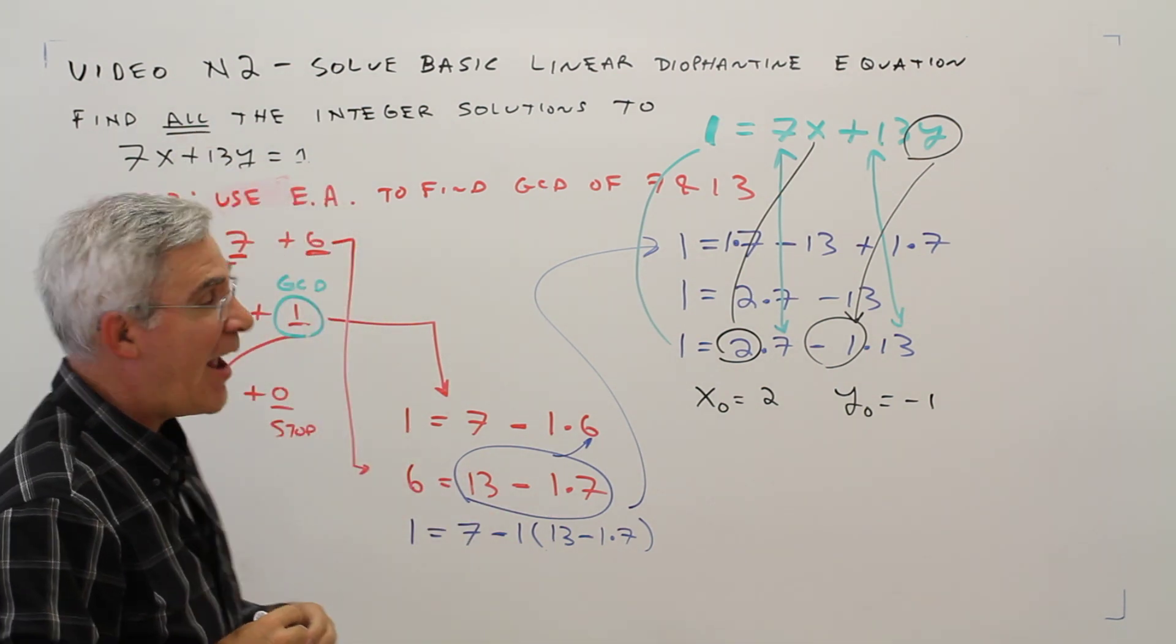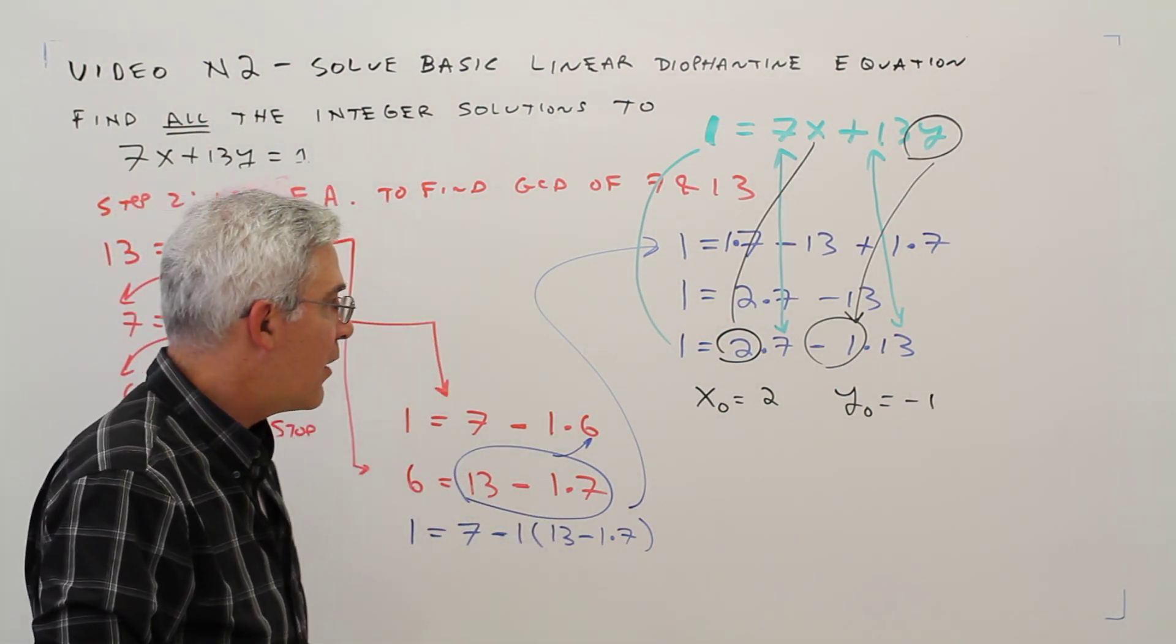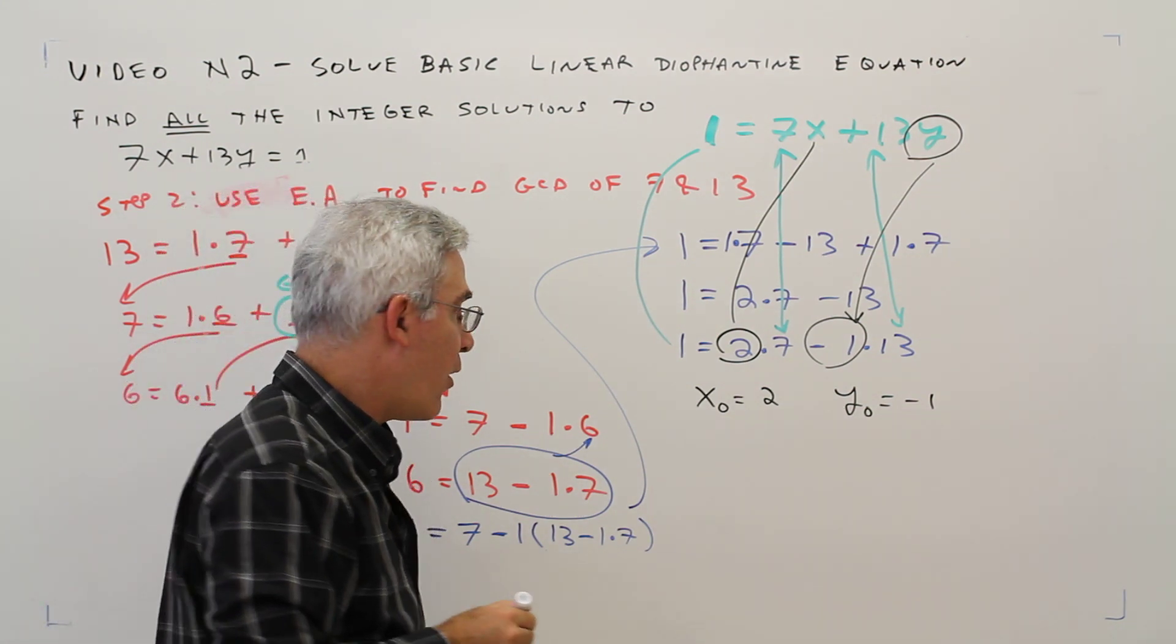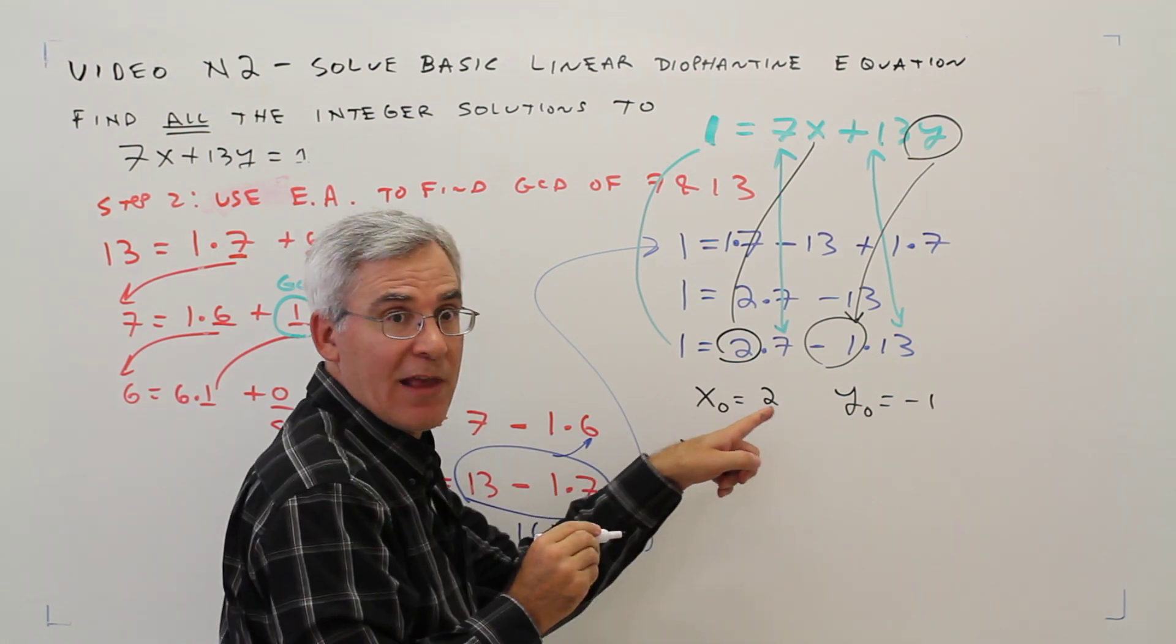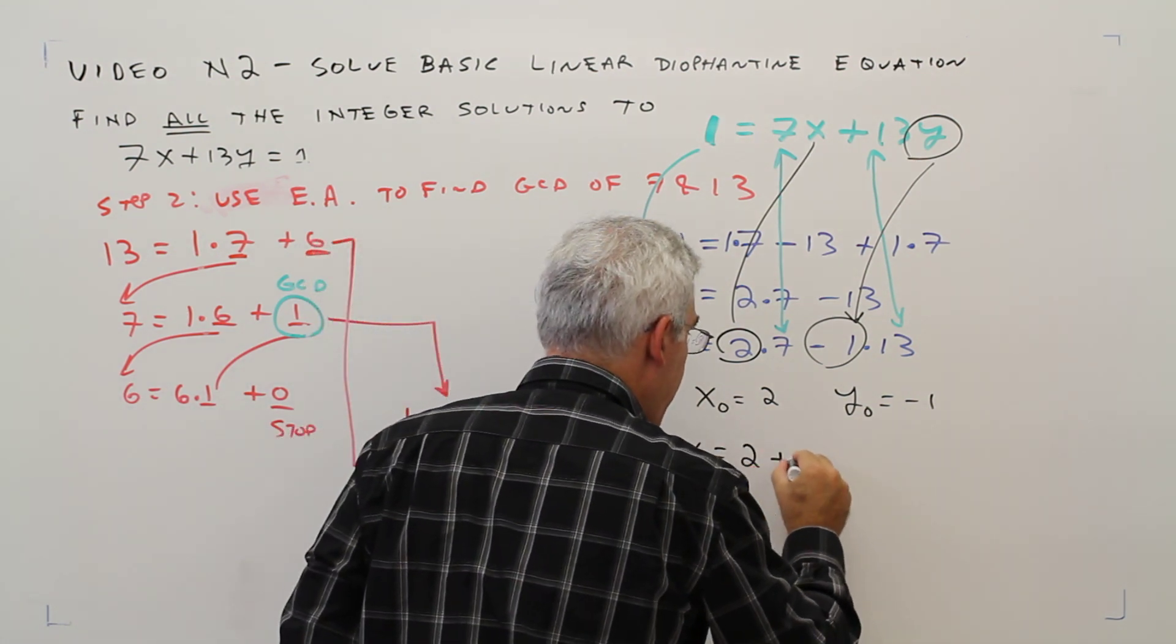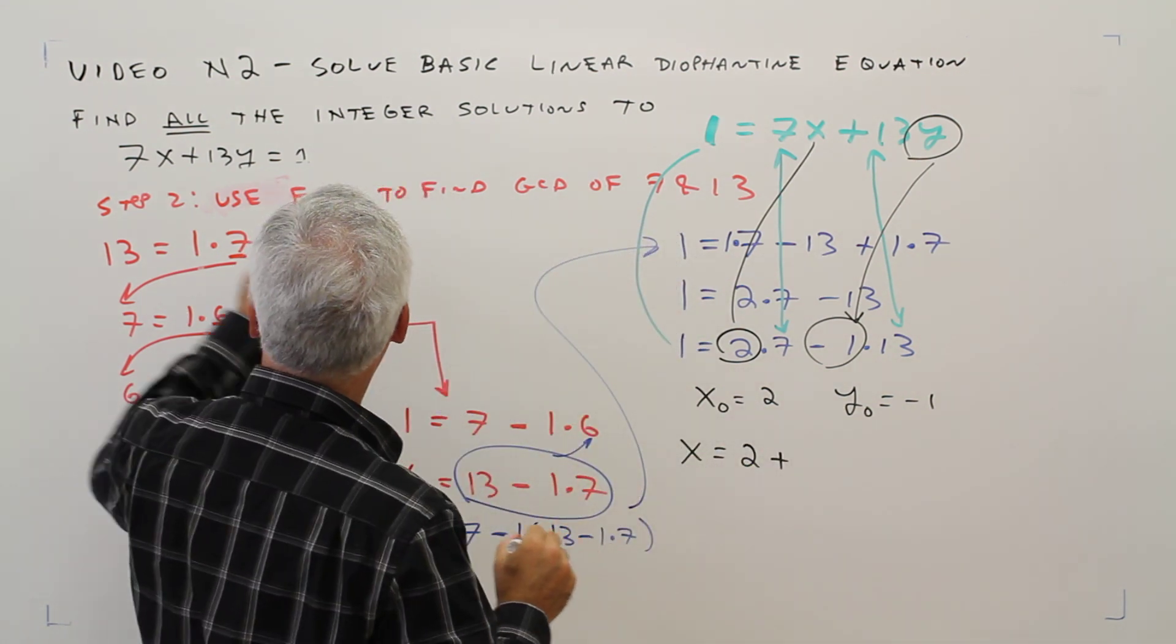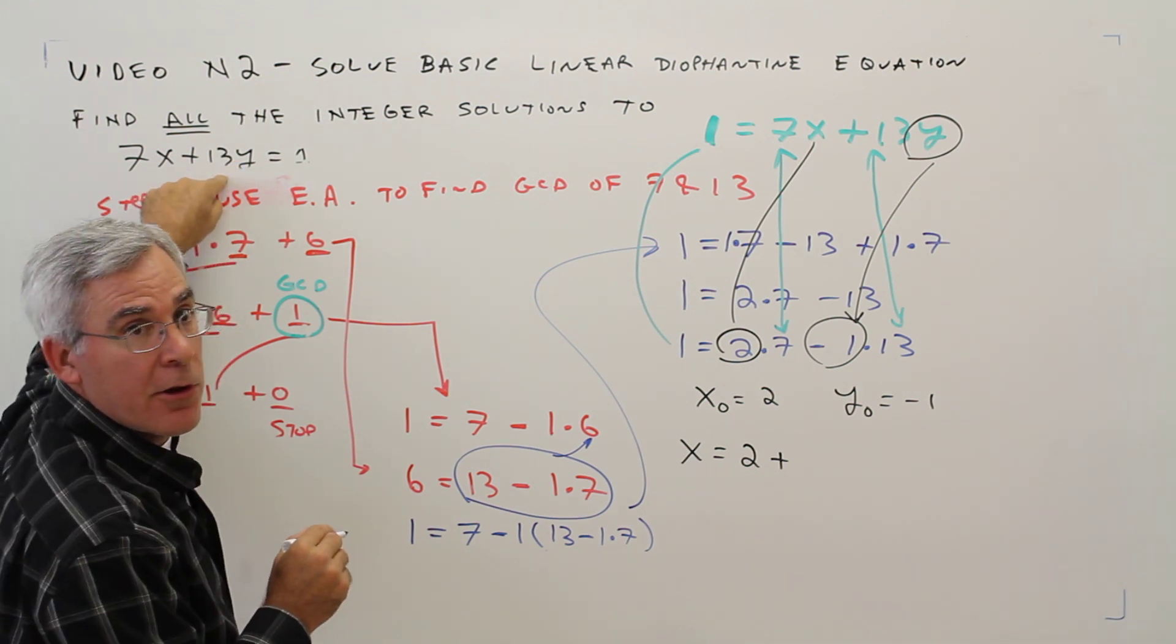The problem asks me to find all the integer solutions. So now I'm going to use that general form. So the general form is x equals x naught plus the other coefficient, if you will, times some multiple n.